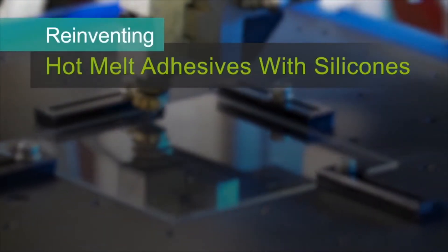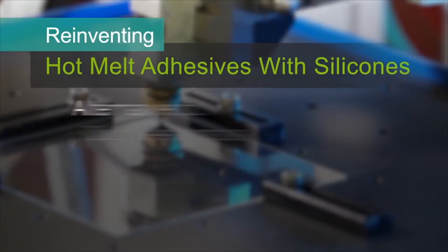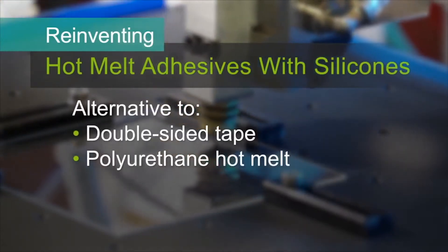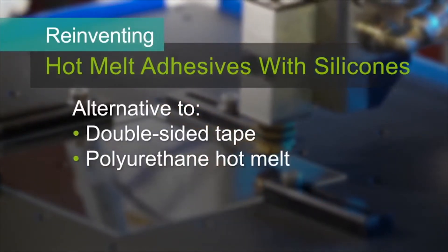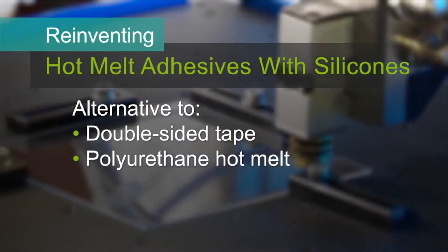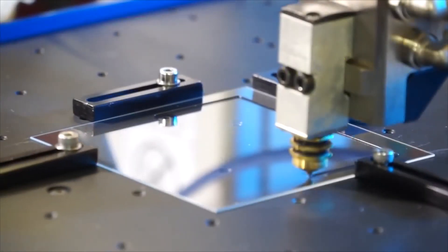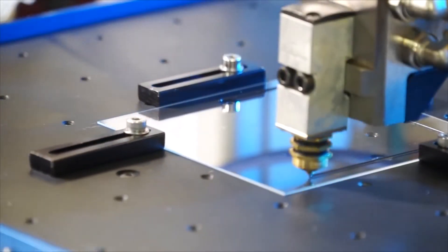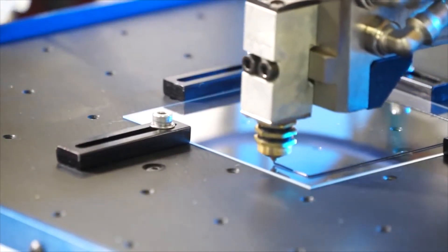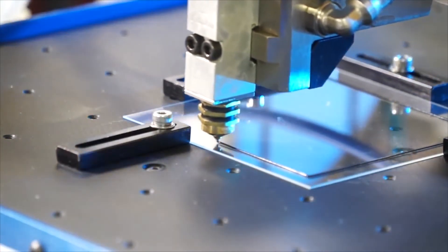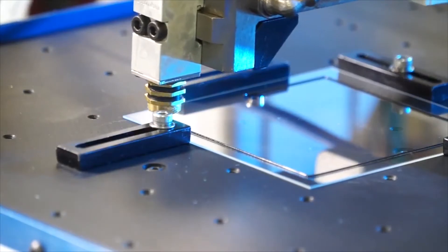At Dow Corning we've introduced new silicone technology that reinvents hot melt adhesives for assembling consumer electronics. Silicones give manufacturers an excellent alternative to traditional double-sided tape or polyurethane hot melt adhesives. As the first supplier of silicone hot melt adhesives to the electronics industry, Dow Corning is helping manufacturers and designers make their electronics more durable and reliable.